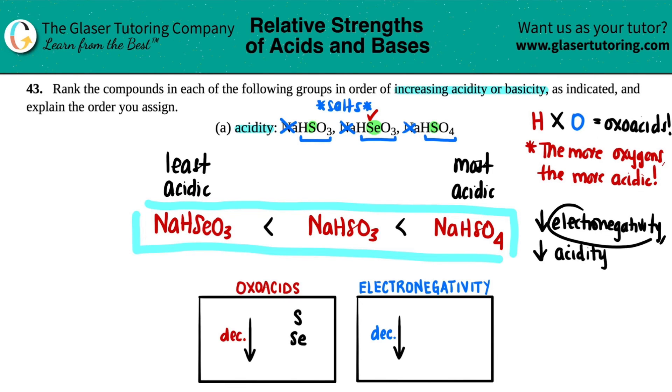Because remember, the more electronegative the element, the easier it is to give up that hydrogen. And if you're more willing to give up a hydrogen, you're going to be more acidic because you're going to donate that hydrogen.